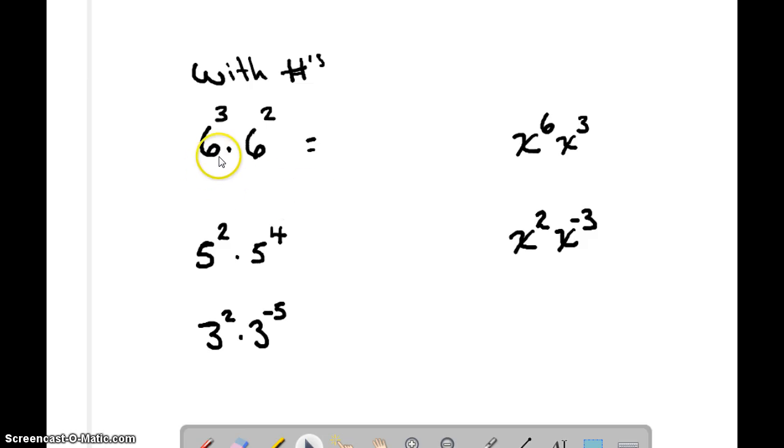So here we have 6 to the third times 6 squared. So the first thing I'm going to do is show you what that really means. Well, it means 6 times 6 times 6, that's 6 to the third, times 6 times 6, that's 6 squared. So how many 6's am I multiplying here? Well, I'm multiplying 5. And so the rule becomes that if I have a common base, in this case my base is 6, then when I multiply them together, I just add the exponents. So 3 plus 2 is 5.